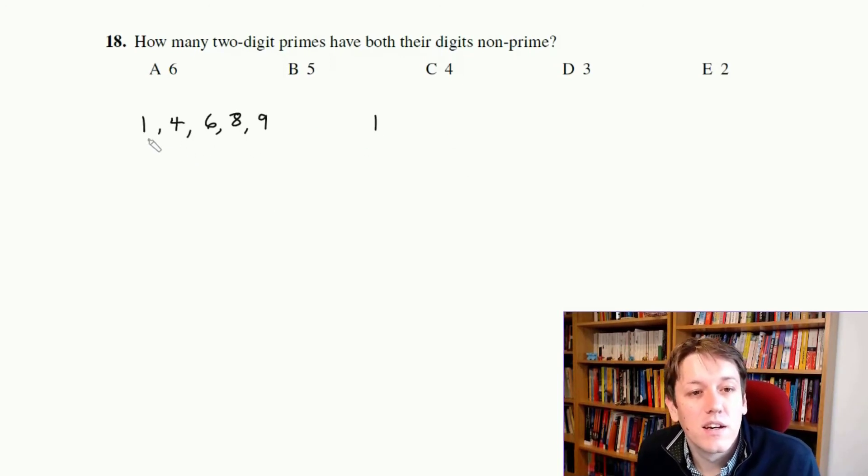So I'm going to look at things that start with 1 first, so 1 then something, and I can only choose between these. Now 11 is prime, 14 is not, 16 is not, 18 is not, and 19 is prime.